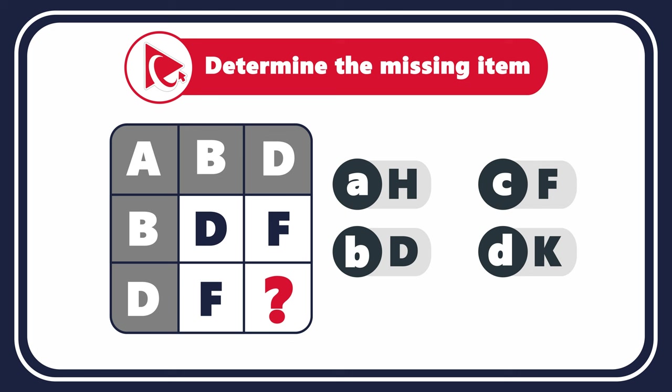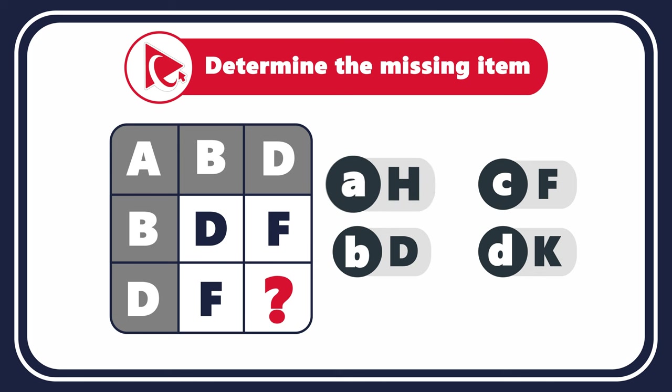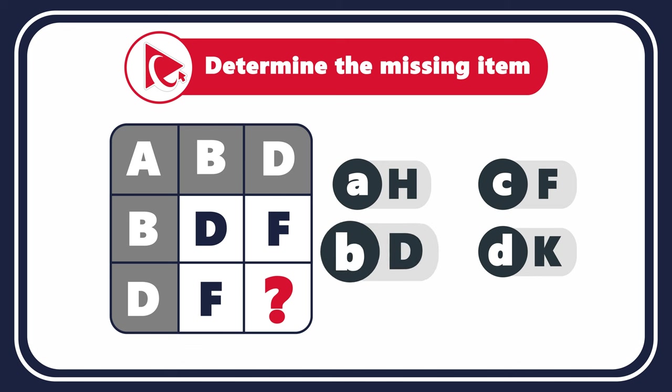The third row has letters D and F, followed by the missing letter you need to select from choices: A is H, B is D, C is F, and D is K.